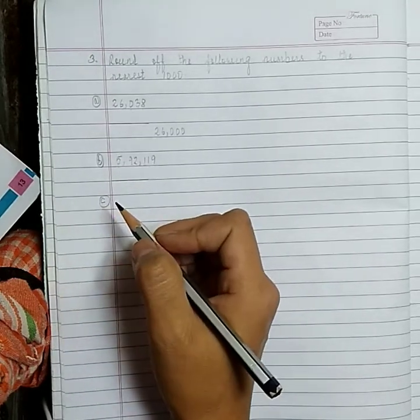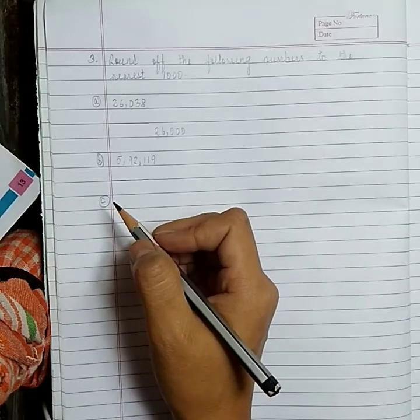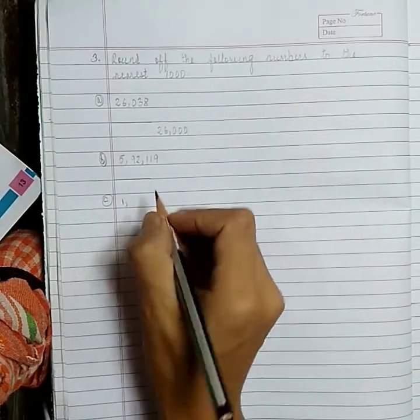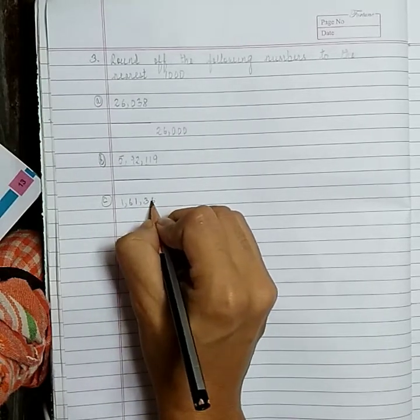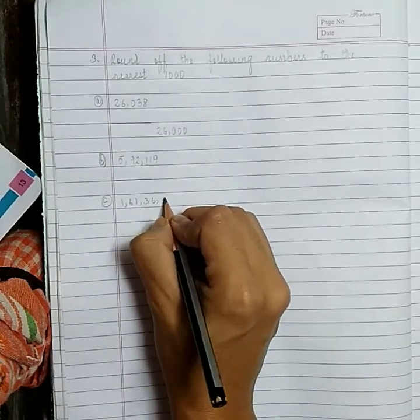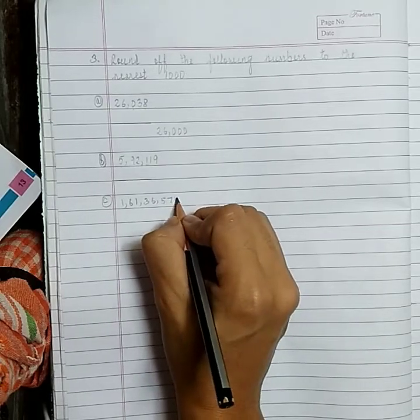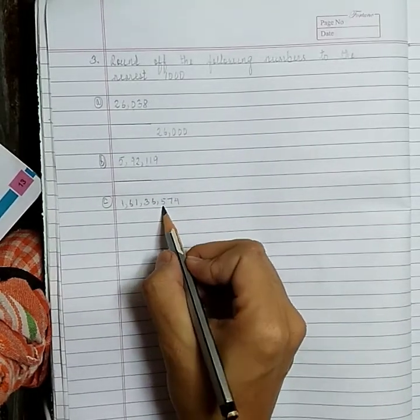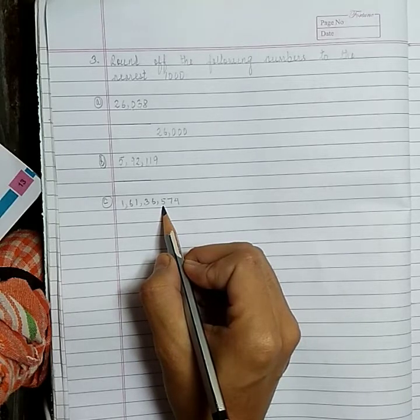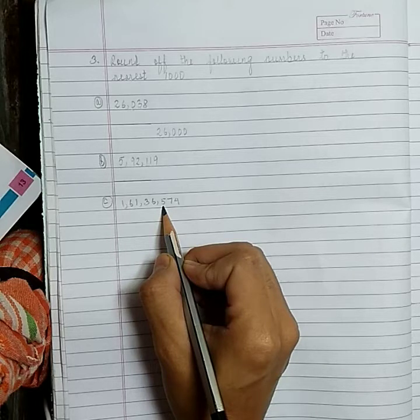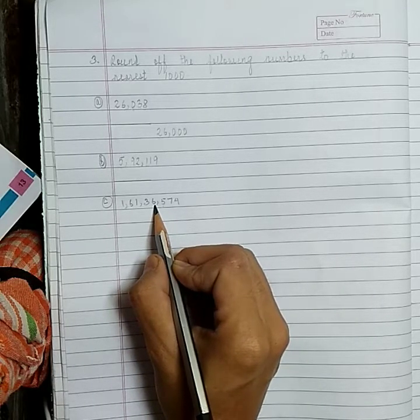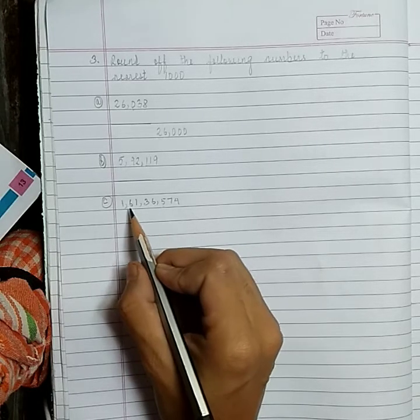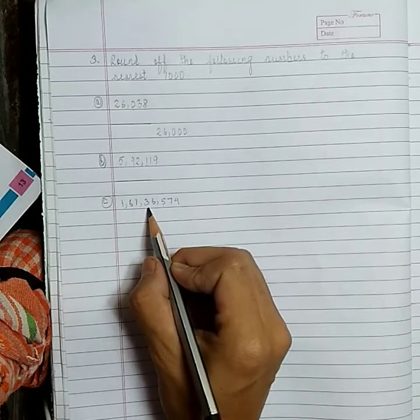Next: 1 crore 61,36,574. The 100th place is 5, so we will add 1 to the 1000th place. The answer will be 1 crore 61,37,000.